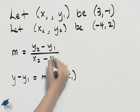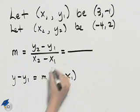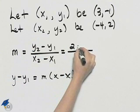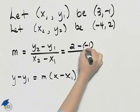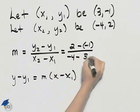We need to find the slope before we can find the equation. y sub 2 is 2, y sub 1 is negative 1. x sub 2 is negative 4, x sub 1 is 3.